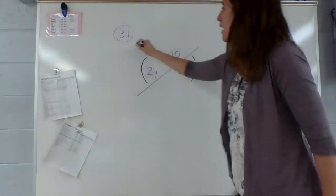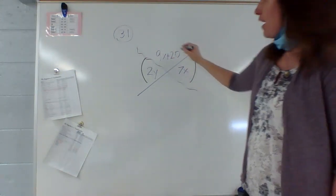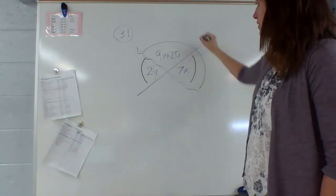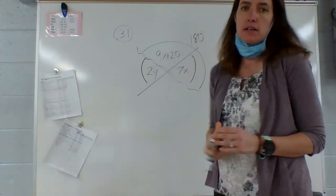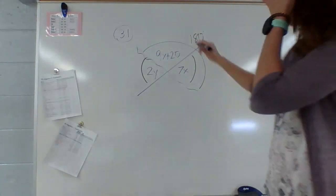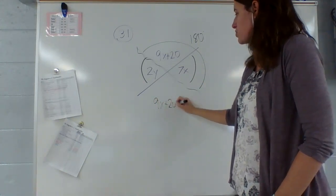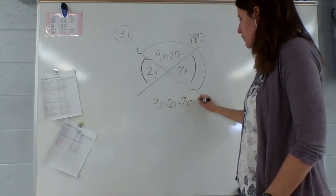So instead, I'm going to use the fact since these are both x's, I know this together is 180 degrees. So I'm going to figure out what x is by setting 9x plus 20 plus 7x equal to 180.